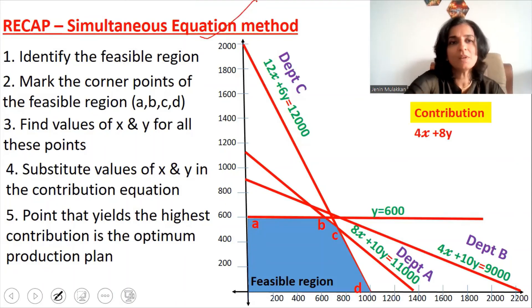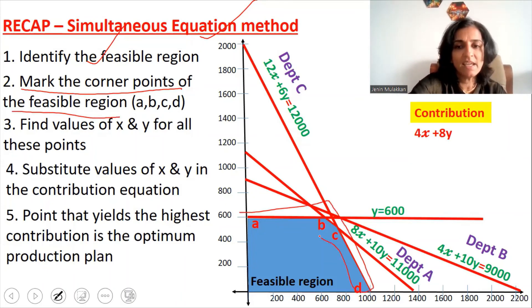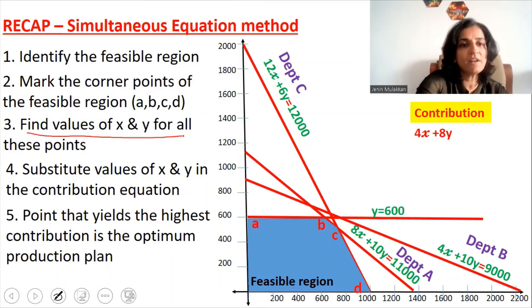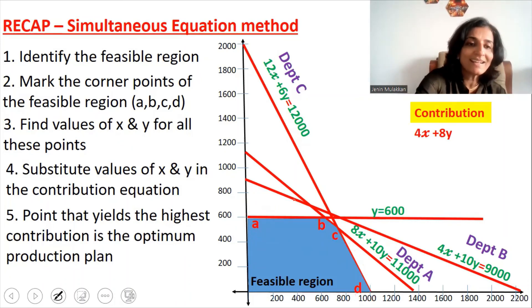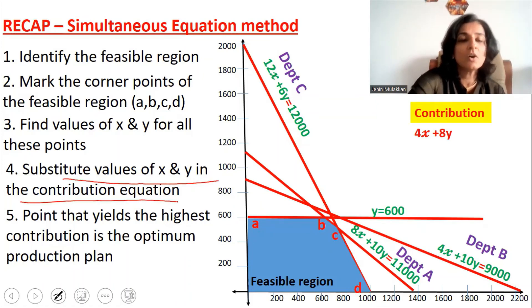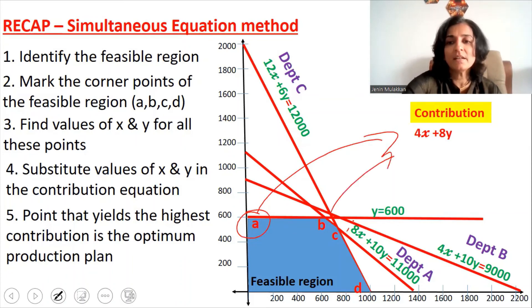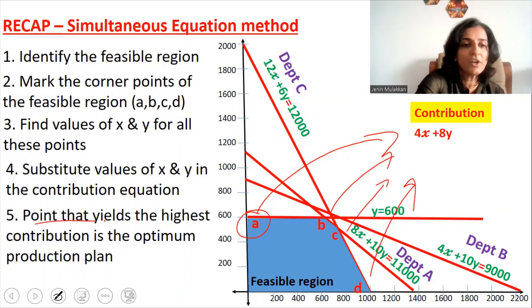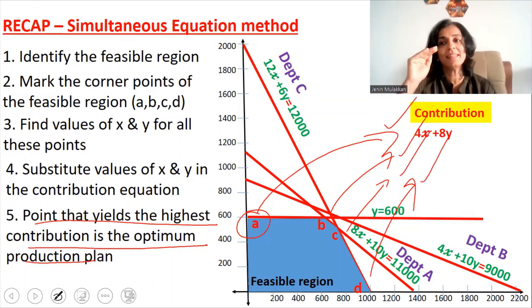To recap the simultaneous equation method: first, identify the feasible region; second, mark the corner points (in this case A, B, C, and D); third, find the values of X and Y for all these points; fourth, substitute those values into the contribution equation (here, 4X plus 8Y); and finally, the point that yields the highest contribution is the optimum production plan. Please take a screenshot of this recap slide for easy revision before your examination.